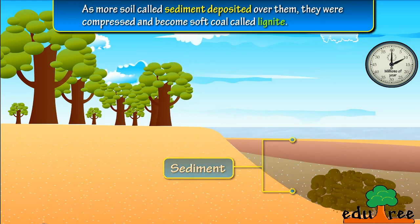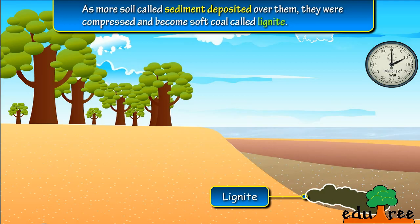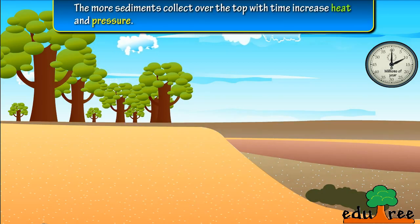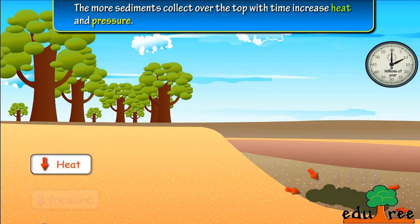They became soft coal called lignite. More sediments collecting over the top increased heat and pressure over time.